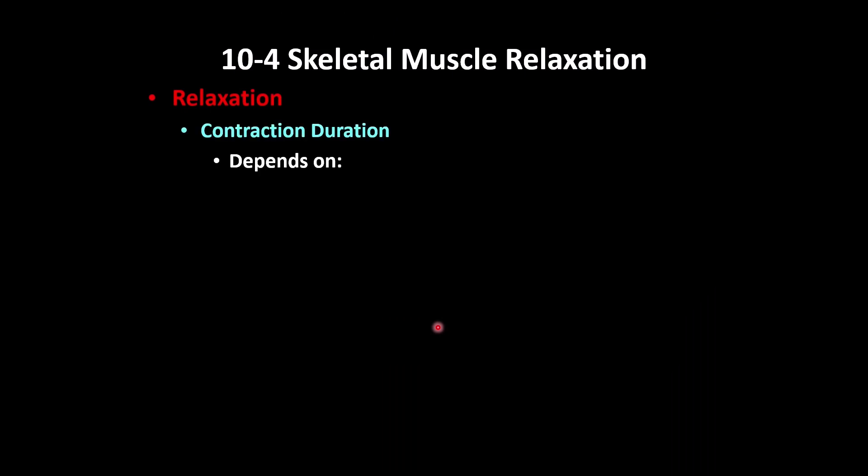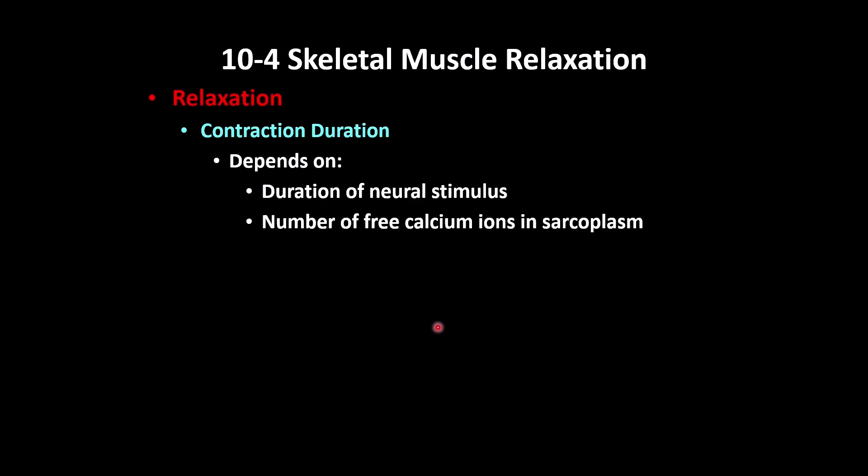What will happen during the relaxation of the muscle depends on the duration of the neural stimulus. Skeletal muscles are under conscious control, so as long as you want to maintain activity, neural stimulation is present. But other factors are involved as well: the amount of calcium is important — not enough calcium means contraction may not take place — and the amount of ATP matters, because even if you want to move, without enough energy the muscle cannot contract.